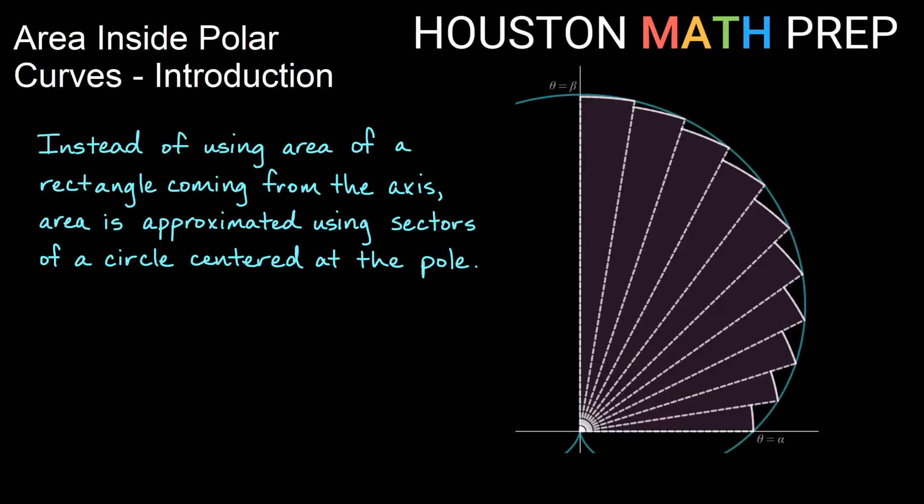When thinking about area inside of a curve using a polar idea, instead of using rectangles coming off of the horizontal axis, we will use sectors of a circle, which are centered at the pole, at the origin, to approximate our area inside this curve.